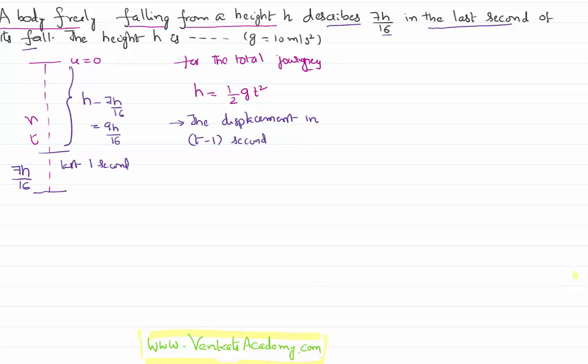is 9H/16 = (1/2)g(t-1)². Let me call this equation number 2. Let me call the earlier one equation number 1. Now let us simplify this further by dividing equation 1 by equation 2. Left hand side is H/(9H/16).